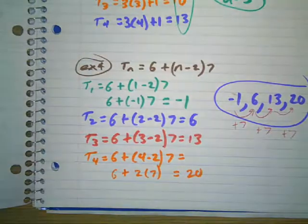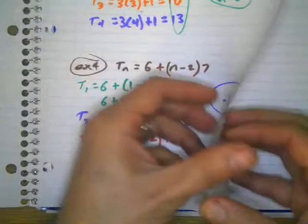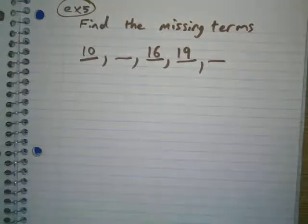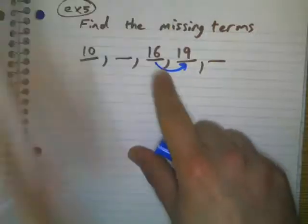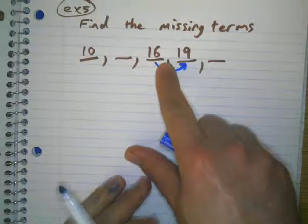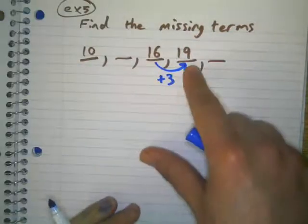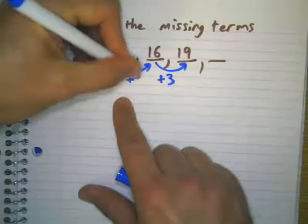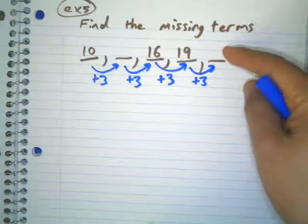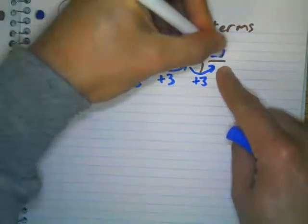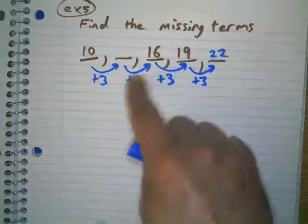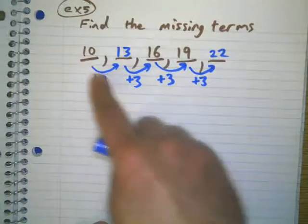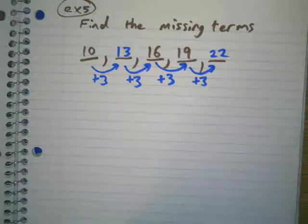One more example: find the missing terms. How do we do this? First, see what the difference is between the known terms — 19 minus 16 is 3, so the common difference is 3. If I add 3 to 19, I get 22. If I subtract 3 from 16, I get 13. Let's check: 10 plus 3 gives 13. That works. And that's what you need to do for your homework on MathSpace.